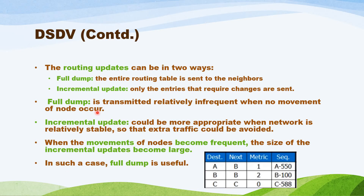Full dump will happen only if the mobility is more — when more nodes are moving from one point to another. In that situation, we use full dump. Incremental update is used when only one or two nodes are moving within the network. When the movements of the node become very frequent, the size of the incremental update becomes larger, and in that situation we use full dump.